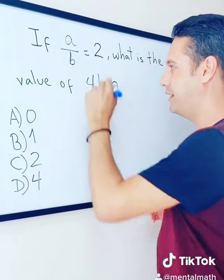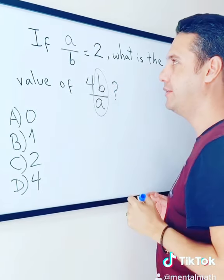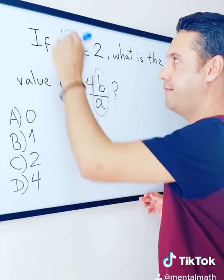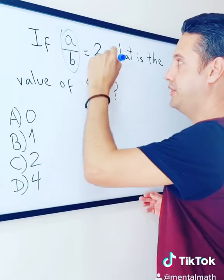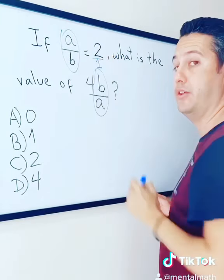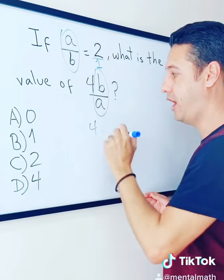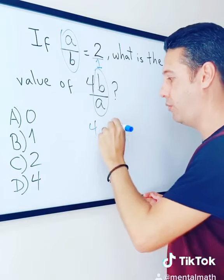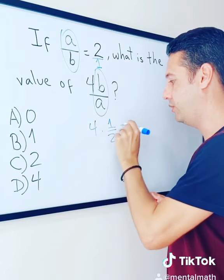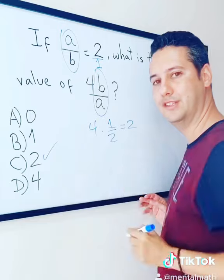Simply notice that B over A is the reciprocal of A over B, which is 2 over 1. In other words, this is equal to 4 times — if you flip 2 over 1, you get 1 over 2 — which is equal to 2. So the answer is C.